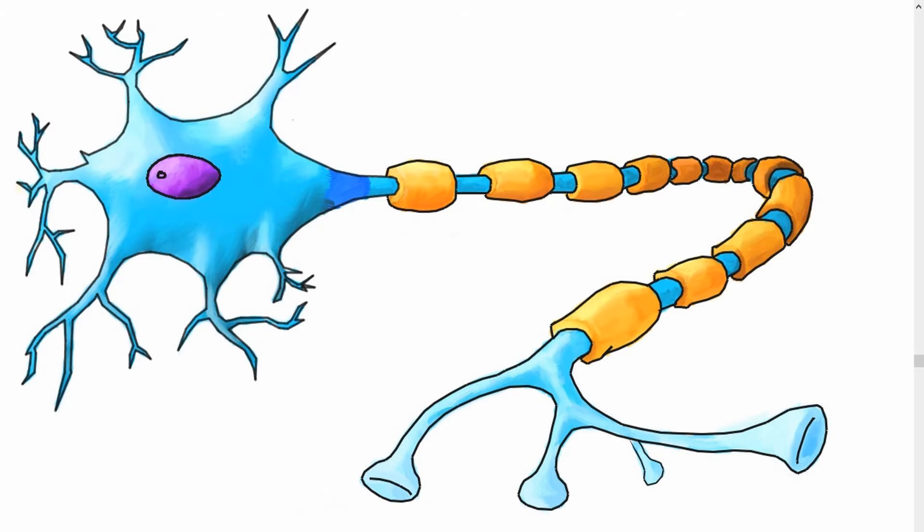Here I have drawn your typical image of a neuron. Now keep in mind, there are many different types of neurons, but for our purposes, this image of a neuron is what you will most likely encounter in a textbook and classroom setting.